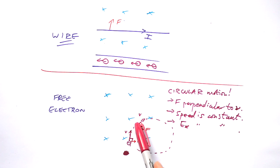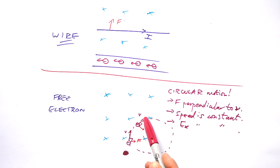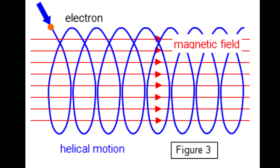It only goes in a perfect circle if the electron's velocity is on the plane perpendicular to the magnetic field. If the particle's velocity isn't on that plane, then only the component perpendicular to the field is affected, while the component parallel to the field is unchanged. So what happens? Velocity in the direction of the field is unchanged, but velocity perpendicular to the field causes circular motion. Put those together and the particle actually spirals.